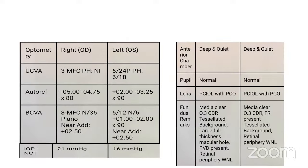Vision in the right eye, best corrected, was three-meter finger counting. In the left eye it was 6/12. IOP in the right eye was 21, in the left eye it was 16. Pupils were normal in both eyes, anterior segment was normal in both eyes. Both eyes had pseudophakia with PCIOL and PCO. In the right eye, media was clear, cup-disc ratio was 0.3. The background was desolated. There was a large full thickness macular hole. PVD was present and retinal periphery was within normal limits. The left eye fundus was within normal limits.